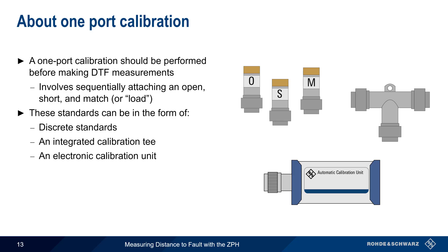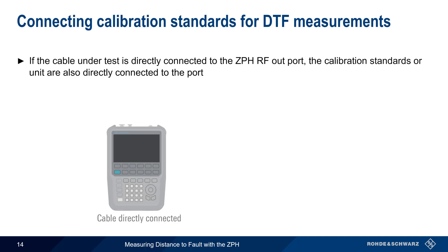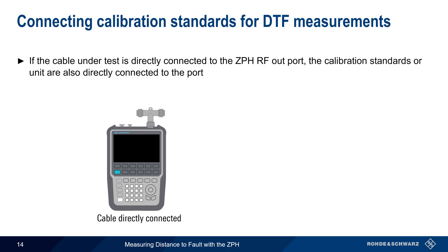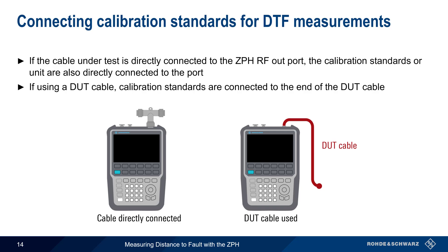Regardless of which type of standards are used, the process is started by pressing the Cal/Span hard key, Full 1 Port, and selecting the calibration kit. Then simply follow the prompts to run the calibration process. If the cable under test will be directly connected to the ZPH, then the calibration standards or calibration unit should also be connected directly to the RF out port on the ZPH. If, on the other hand, a DUT cable is used between the ZPH and the cable under test, then the calibration standards are connected to the end of the DUT cable. Attaching the calibration standards to the end of the DUT cable removes the effect of the DUT cable from the measurement result.